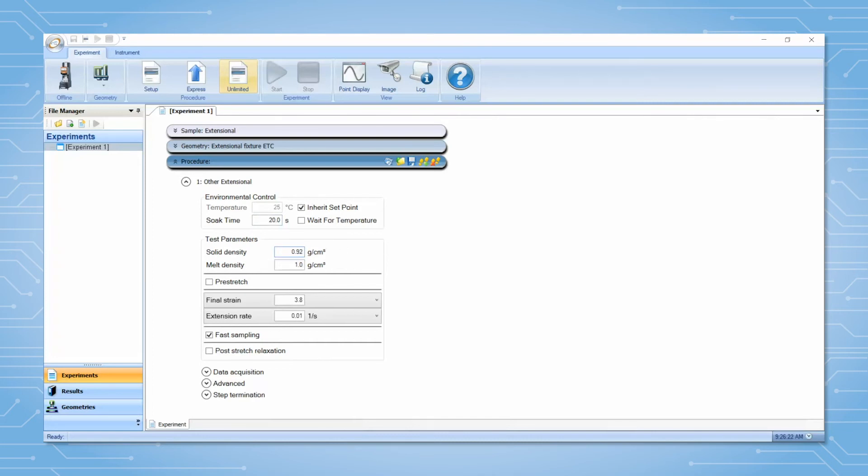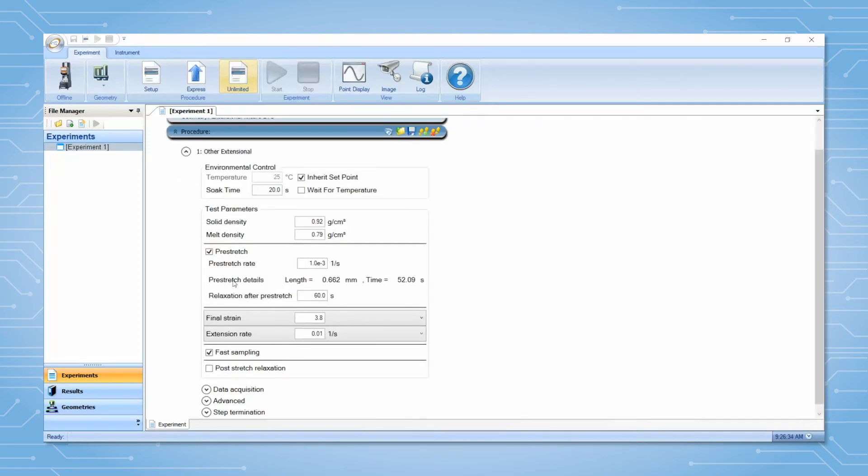The solid and melt densities of the material are used to calculate the pre-stretch step strain. The strain rate should be selected to be much lower than the experimental strain rate and should take approximately 10 seconds.